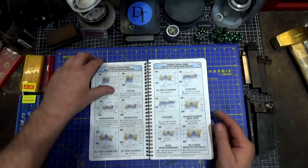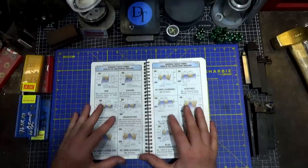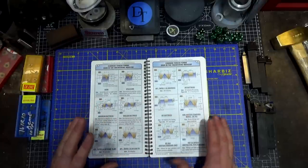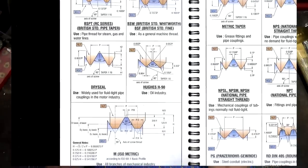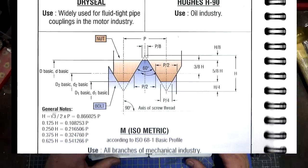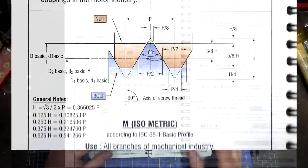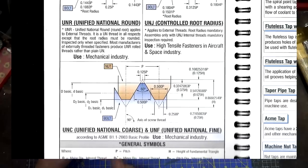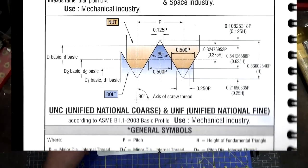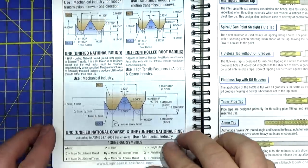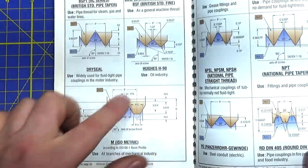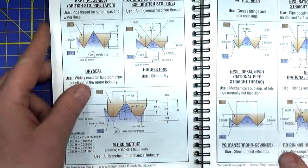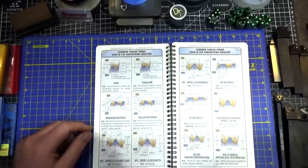Looking at the thread forms directly, there are a ton of variations — so many it makes your head spin. Fortunately, almost all the threads you will run across in normal daily life are the metric ISO threads for a good portion of the world, and the UNC and UNF threads in the United States. At first glance, you'll notice that those two most common thread types — UNC, UNF, and metric ISO — are all 60-degree thread forms, but that's not the only thread angle out there.